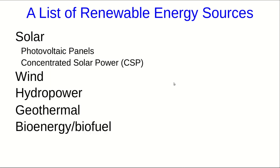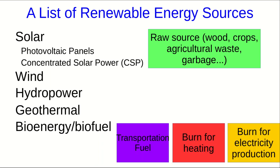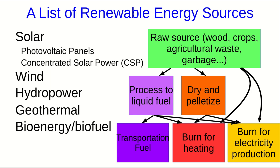Finally, I'll briefly mention bioenergy or biofuel. This is a huge and complicated set of possibilities. We have some raw source such as wood, crops, agricultural waste, garbage, and many other options. This can be used to generate anything from transportation fuel to direct heating to electricity. The raw source can be burned directly, but more commonly in higher tech applications the raw source is processed to a liquid fuel through chemical means, or dried and pelletized, and then used for transportation fuel, heating, or electricity.